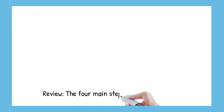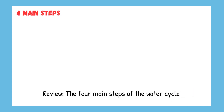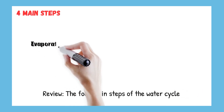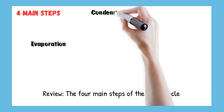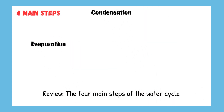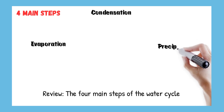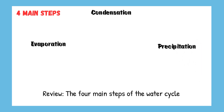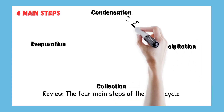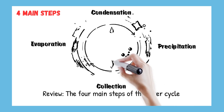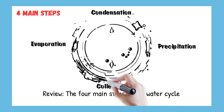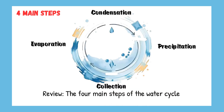So remember, the water cycle has four main steps: evaporation, condensation, precipitation, and collection. This amazing cycle keeps water moving everywhere — from the oceans, to the clouds, to the rain, and back again.